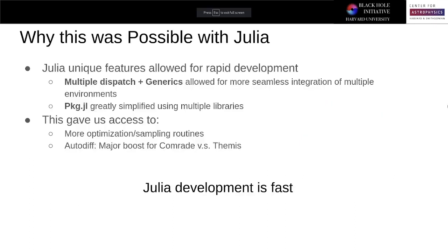So how did we actually achieve this performance with Julia? Well, it's not that C++ is inherently slower than Julia. It's not. What it is is that Julia had unique features that allowed us to rapidly develop Comrade. One of these features is multiple dispatch, which allowed us to seamlessly integrate multiple packages together and have everything, quote, just work.